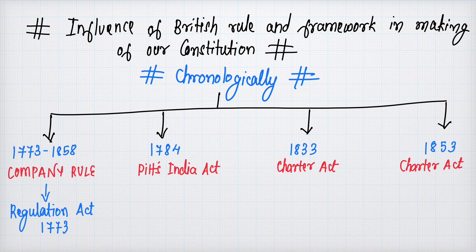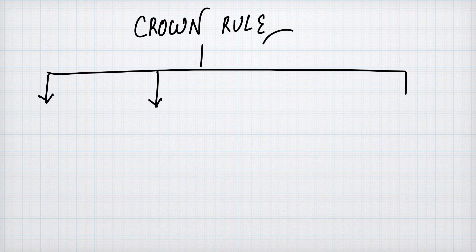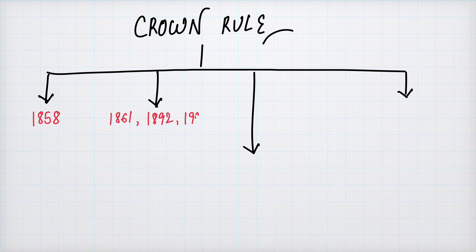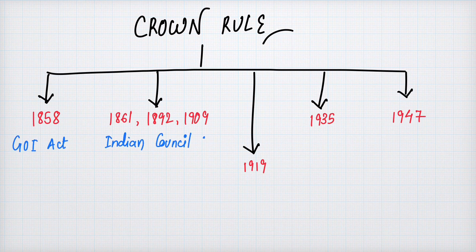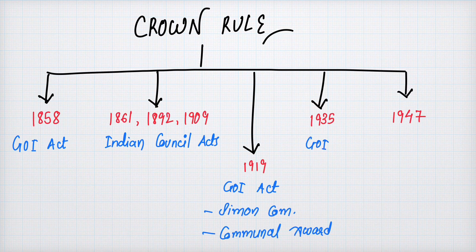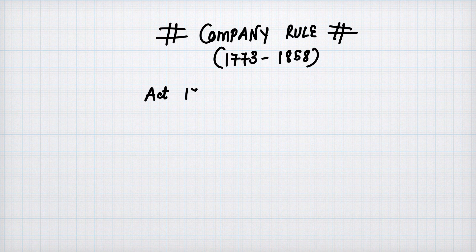Under company rule 1773–1858, we will study: the Regulating Act of 1773, Pitt's India Act of 1784, Charter Act of 1833, and Charter Act of 1853. Then under crown rule, we'll cover the Act of 1858, the Indian Council Acts of 1861, 1892, and 1909, the Government of India Act 1919, Simon Commission, Communal Awards, Government of India Act 1935, and finally the Indian Independence Act 1947.